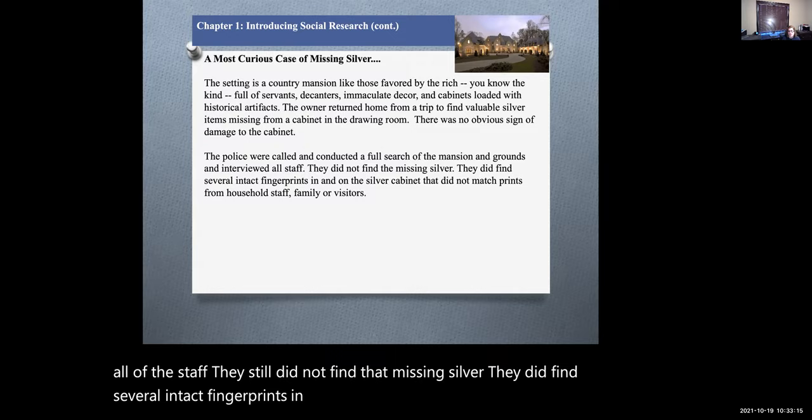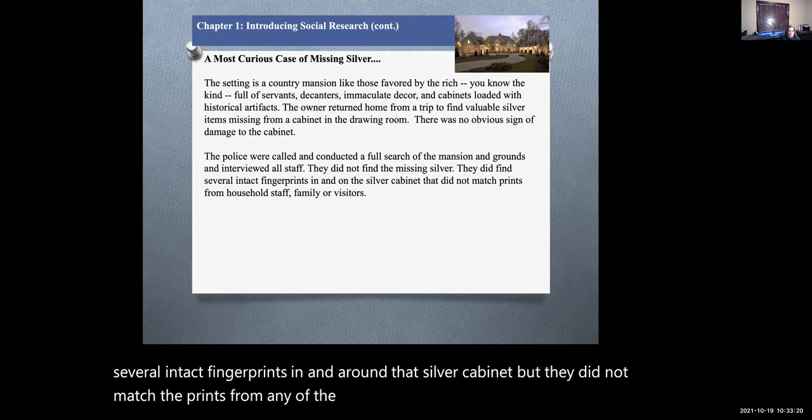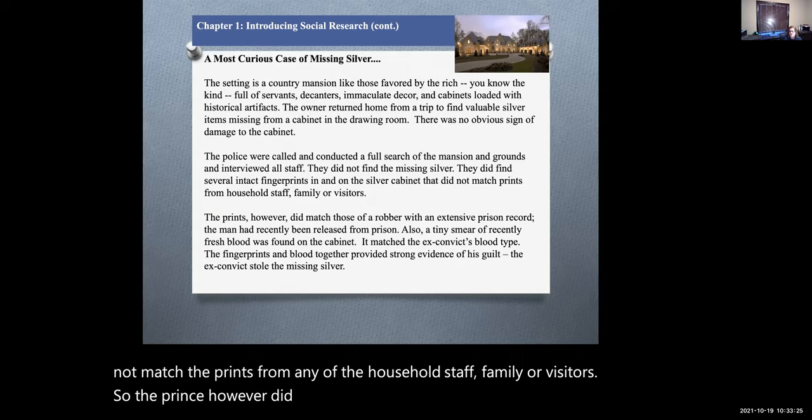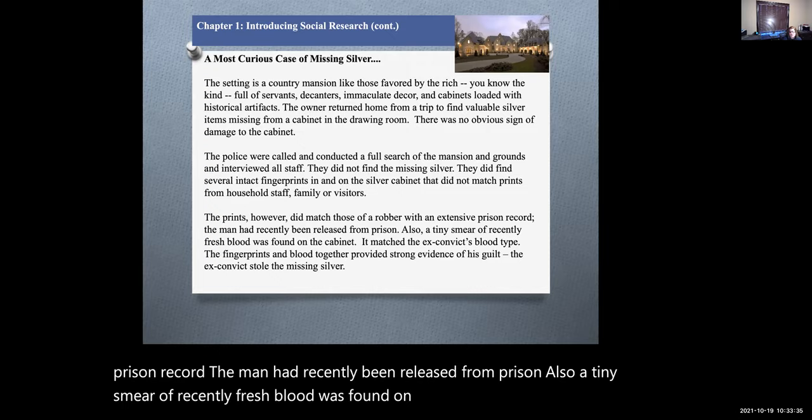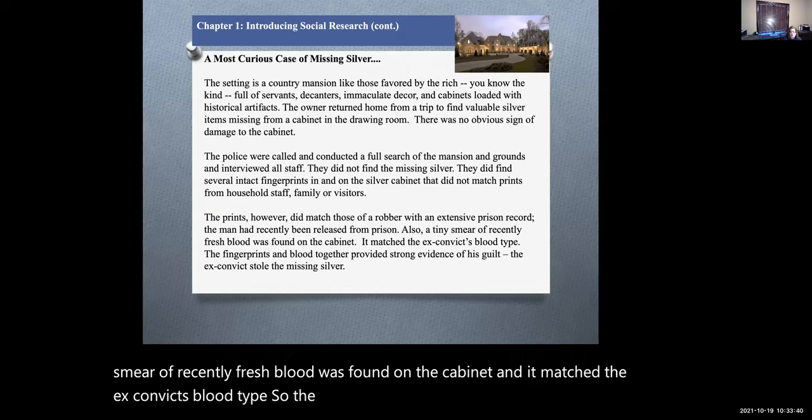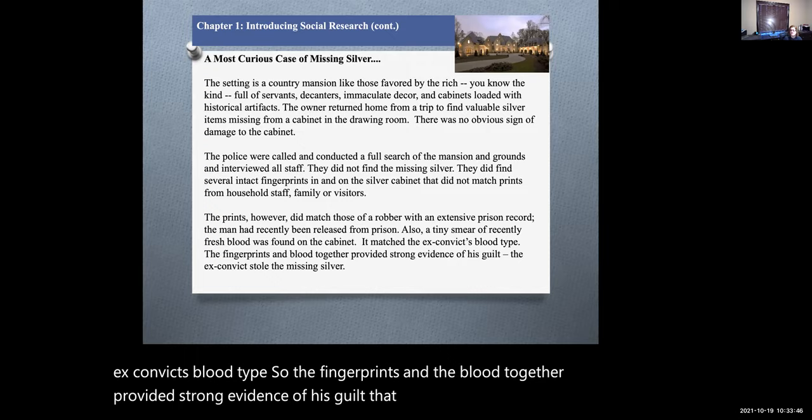They did find several intact fingerprints in and around that silver cabinet, but they did not match the prints from any of the household staff, family or visitors. The prints, however, did match those of a robber with an extensive prison record. The man had recently been released from prison. Also, a tiny smear of recently fresh blood was found on the cabinet and it matched the ex-convict's blood type. The fingerprints and the blood together provided strong evidence of his guilt that the ex-convict might have stolen this missing silver.